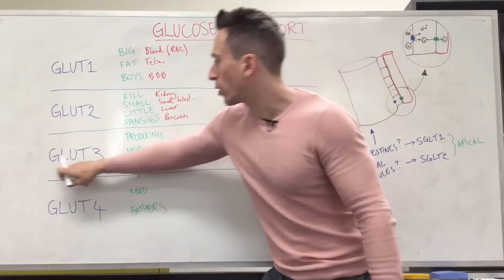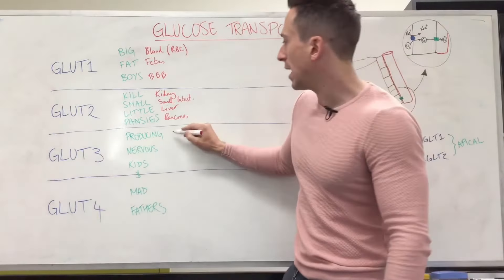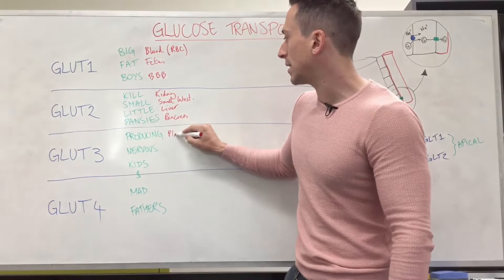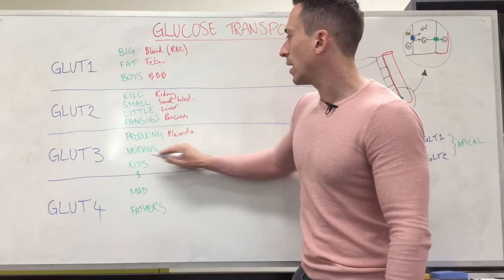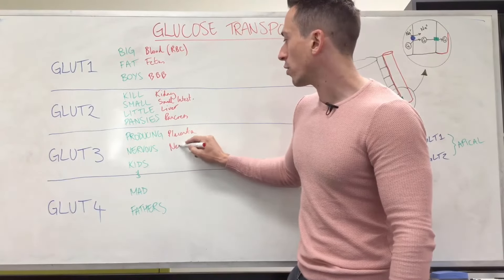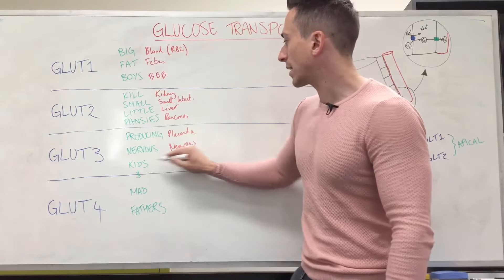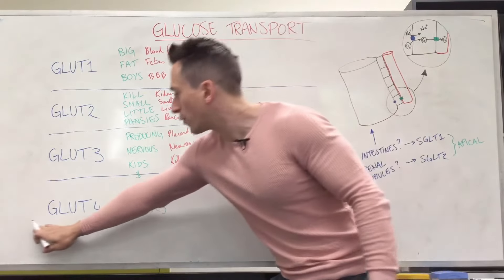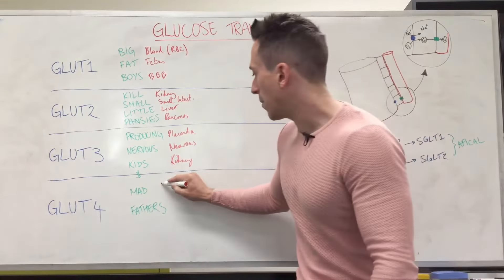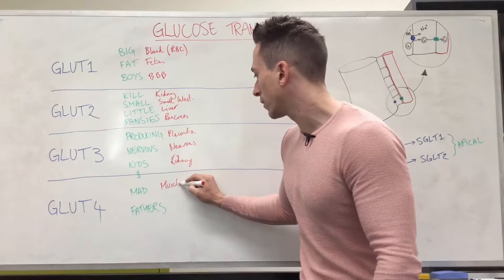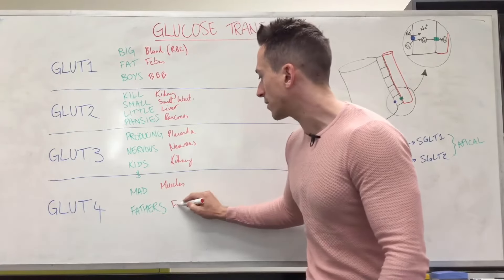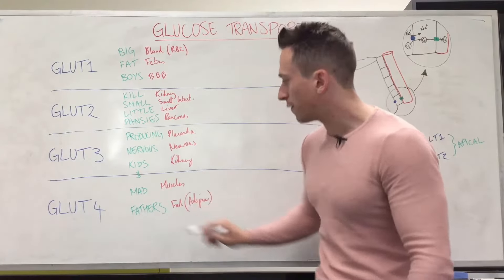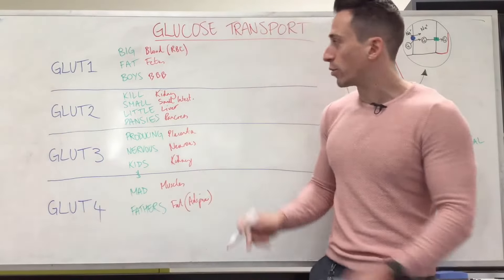For GLUT-3: P stands for placenta, NE stands for neurons, and KI stands for kidneys again. Then for GLUT-4, we have M for muscles and F for fat — referring to adipose tissue. So for muscles and fat to get glucose, they need GLUT-4 transporters.